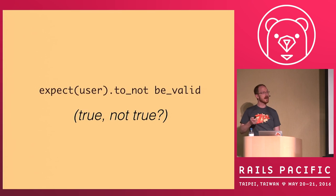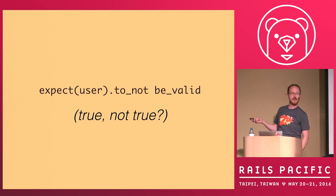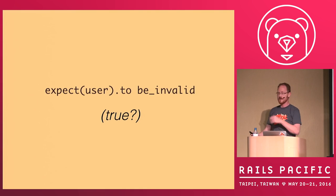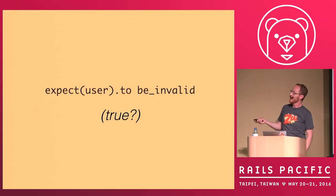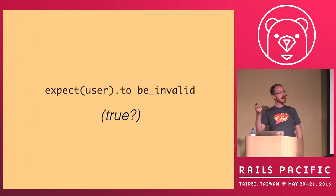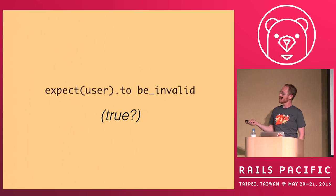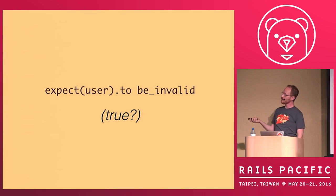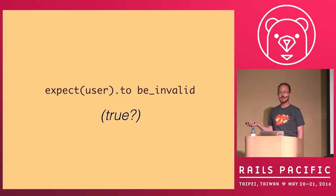We're in luck because Rails specifically has support for an inverted version of valid, which is invalid. You may want to write a custom matcher for this if the library you're using doesn't have it. As a result, the expectation becomes really obvious really fast. When our spec runs and exports the formatted value, it's going to read all of this and properly format it so that if it fails, it will be really easy to understand. We've gotten from 'is true not true' to 'is the user invalid?'